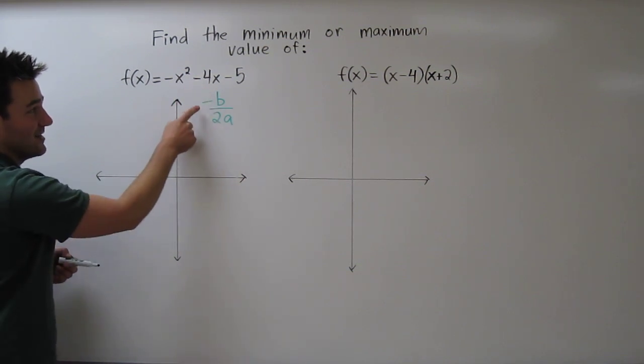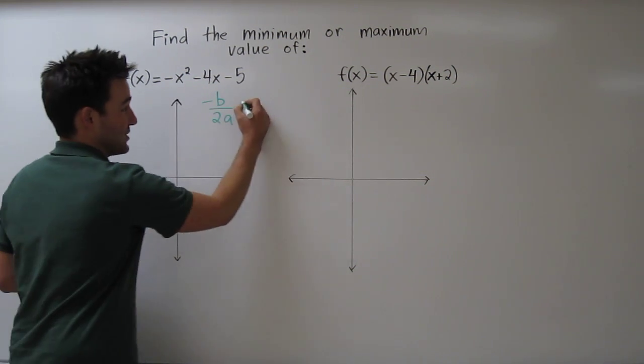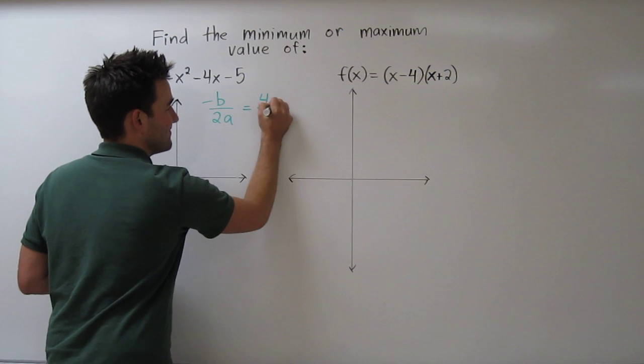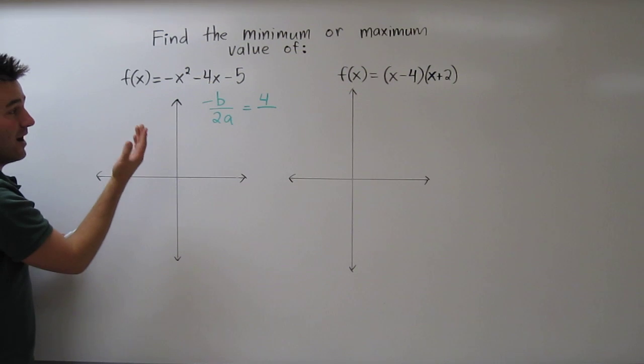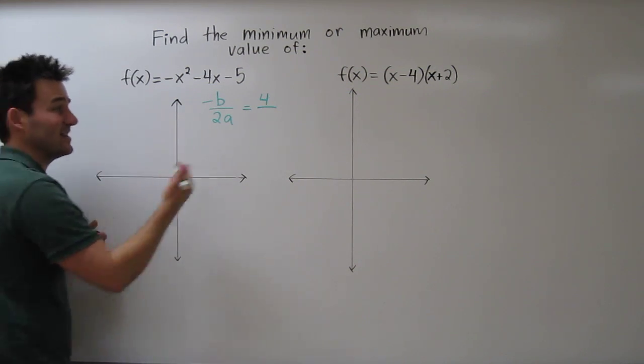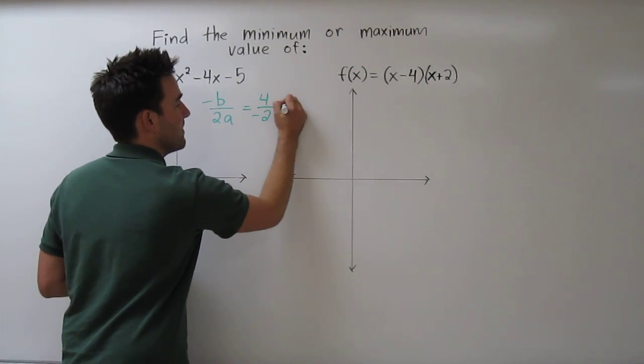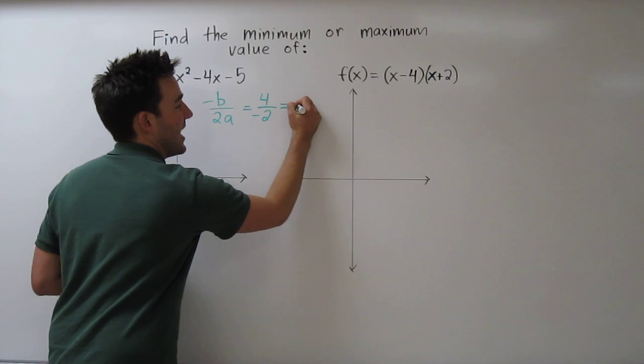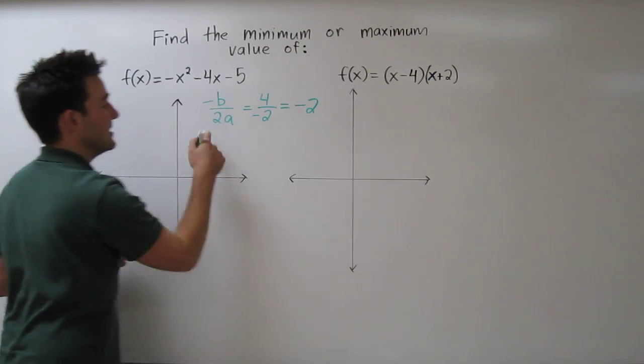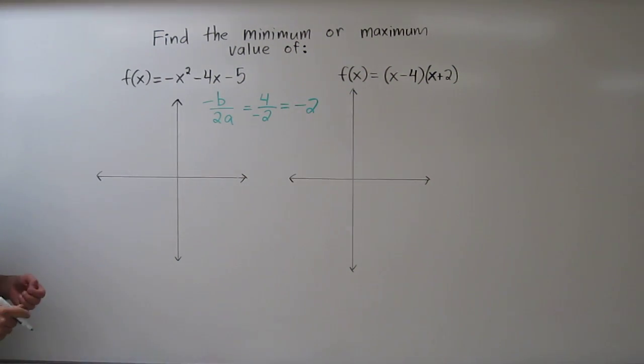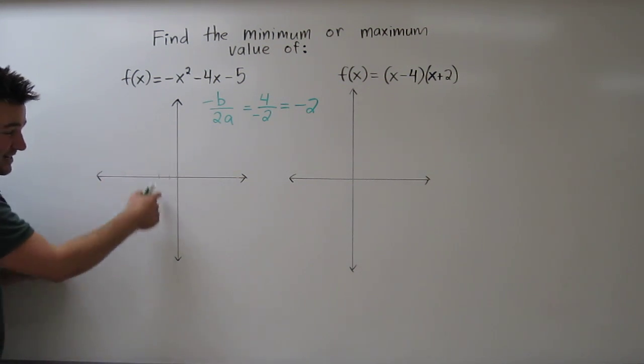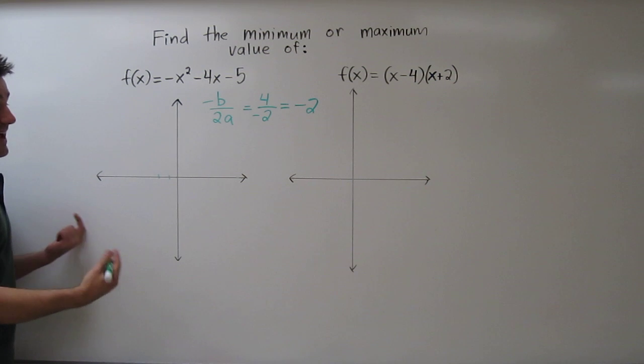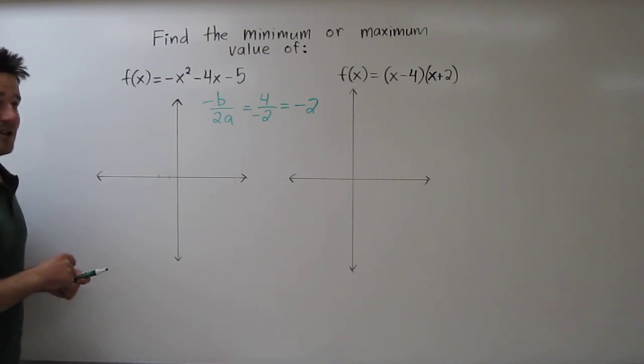That will give us the x-coordinate of the vertex. So b, or the coefficient of the x term, is negative 4. So negative, negative 4 is actually just 4. And 2a, well, our a is negative 1. So 2 times negative 1 is negative 2. So it looks like we have, when we reduce, the x-coordinate of the vertex is at negative 2. So let's see, 1, 2. The vertex is going to be somewhere at the x equals negative 2 line.